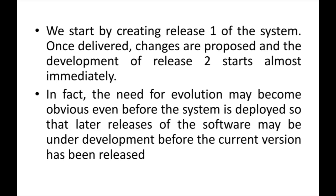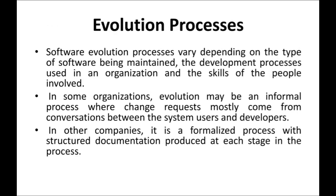The software evolution process varies depending upon the type of software being maintained, the development process used in the organization, and the skills of the people involved. The evolution process will be different for different types of software. In some organizations, evolution may be an informal process where change requests mostly come from conversations between system users and developers — there won't be a separate maintenance team. But in some other companies it is a formalized process where everything is carried out in a professional manner. In some companies maintenance is informal, but in others they take maintenance very seriously.